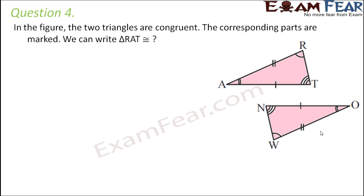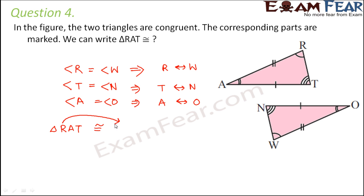Question number 4. In the figure, the two triangles are congruent. The corresponding parts are marked. We can write triangle RAT is congruent to, so we basically need to find the corresponding parts. We see that angle R is equal to angle W. We also see that angle T is equal to angle N. And we see that angle A is equal to angle O. So point R corresponds to point W, point T corresponds to point N, and point A corresponds to point O. So we will say that triangle RAT is congruent to triangle WON.